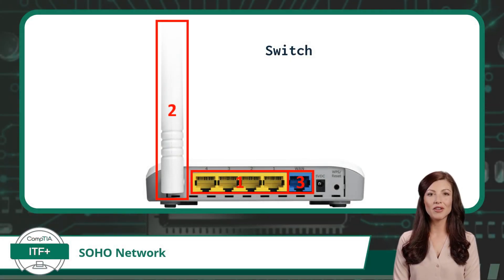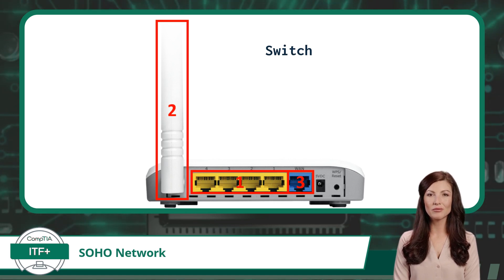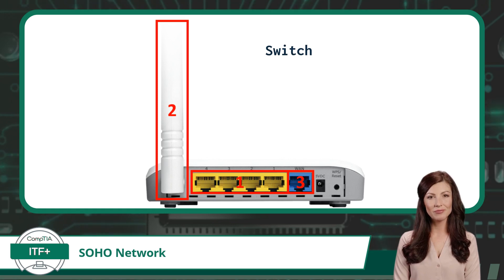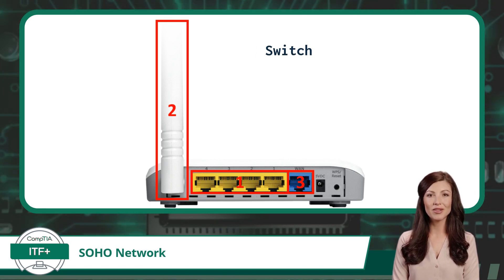First up, we have the network switch. You may recall that a network switch is a network device that connects multiple devices within a local area network. And yes, the SOHO router has a built-in network switch. It may not have as many ports as an enterprise switch, but it will still function the same. The SOHO router displayed here can only connect four computing devices together in an Ethernet LAN. The switch ports are the yellow RJ45 ports inside box number one.